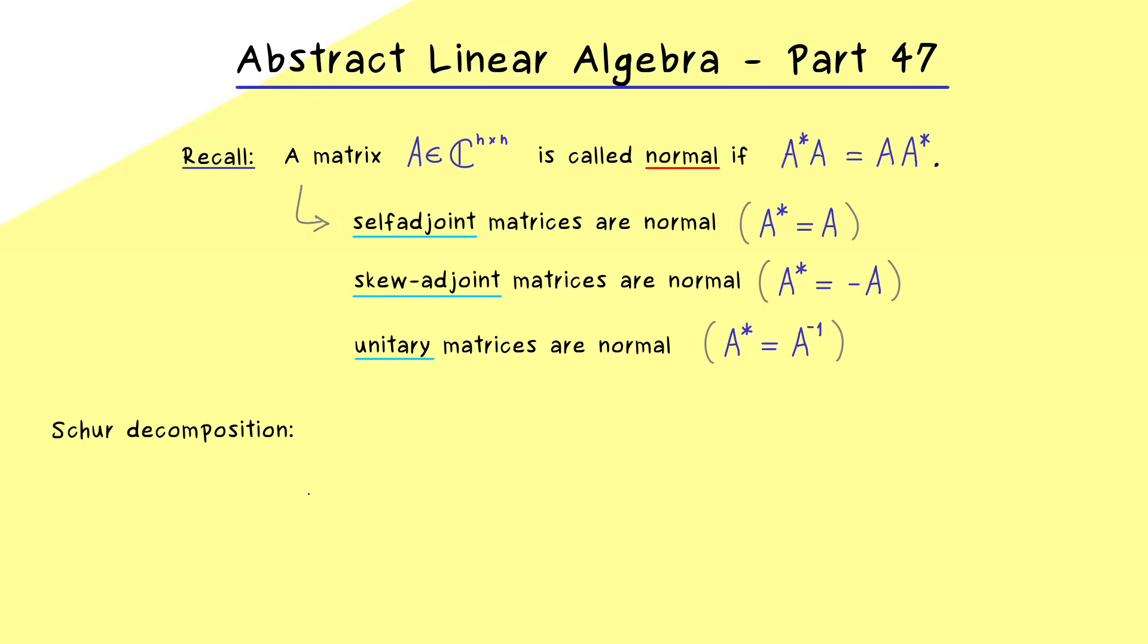So you see we already know a lot of normal matrices and now I want to apply the Schur decomposition to normal matrices. However please first recall that the Schur decomposition tells us that every square matrix can be triangulated, and most importantly this can be done by using a unitary transformation. This means we have a unitary matrix U and we can write U star A U and we get an upper triangular matrix out.